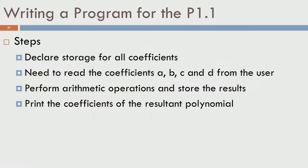To write a program for this problem (P1.1), we need the following steps: first, declare storage — a, b, c, d are all coefficients that if read from the user need to be stored temporarily somewhere. Once the declaration is done, you need to actually read the coefficients from the user, perform all the arithmetic operations required, and finally print them on the screen. That is the basic set of steps.